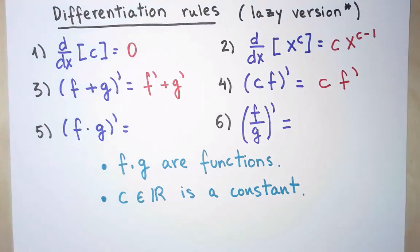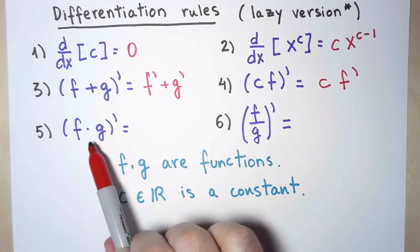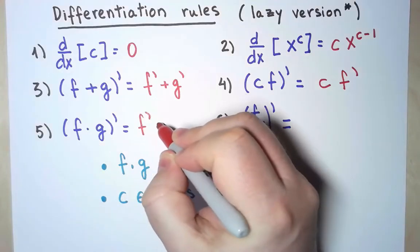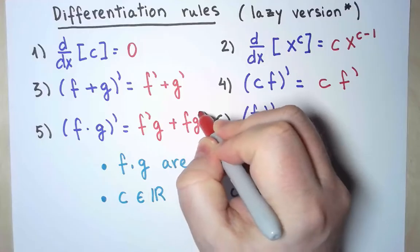The derivative of a product, f times g, is a bit more complicated. It is f prime times g plus f times g prime.